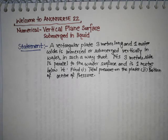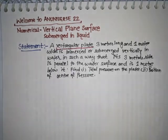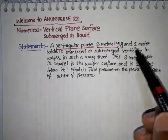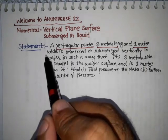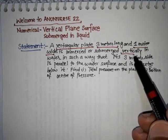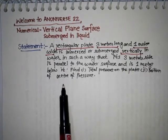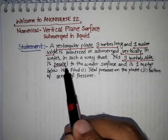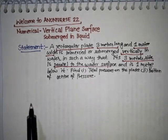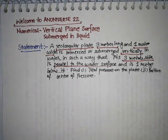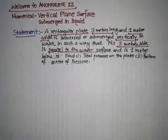And number 2, position of center of pressure. So this is the statement for the numerical. Here we have a rectangular plate whose dimensions are 3 meters long and 1 meter wide, immersed vertically in water such that its 3 meter side is parallel to the water surface and 1 meter below it.